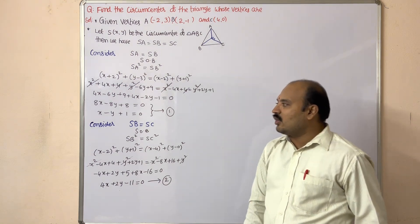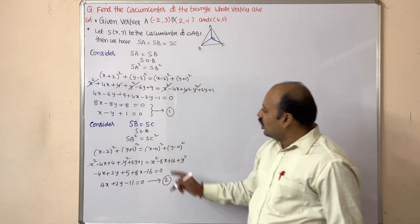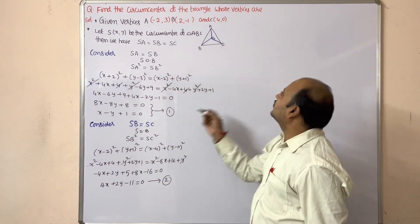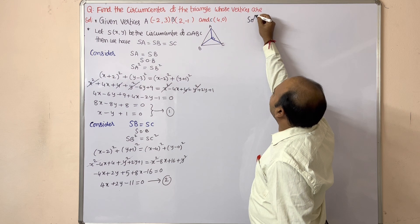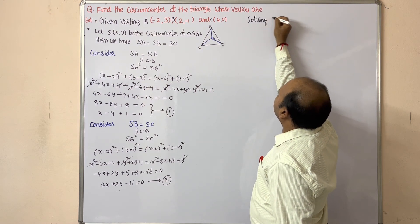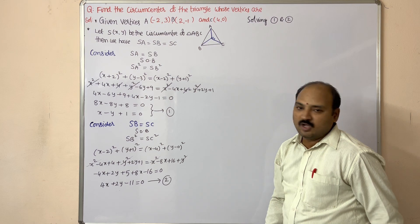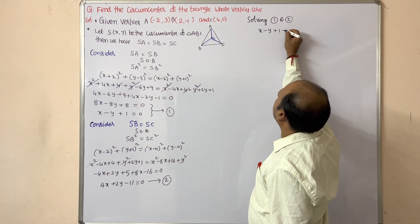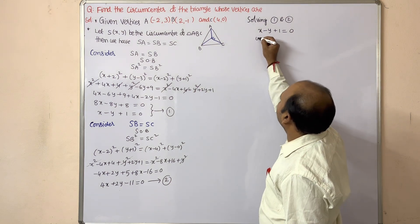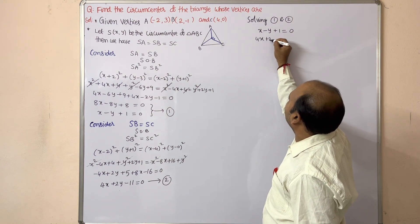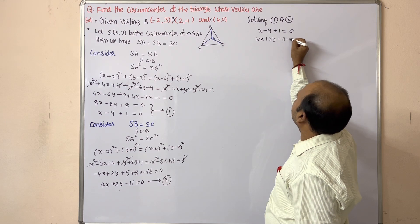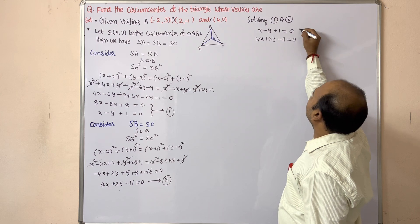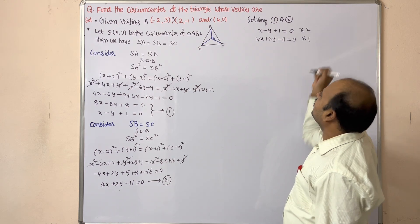Now we solve Equation 1 and Equation 2 to get x and y — the required circumcenter. Equation 1 is x − y + 1 = 0, and Equation 2 is 4x + 2y − 11 = 0. To eliminate y, multiply Equation 1 by 2.